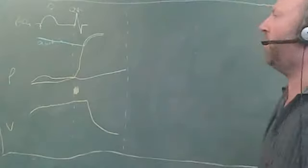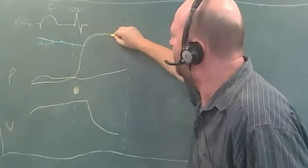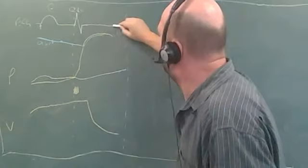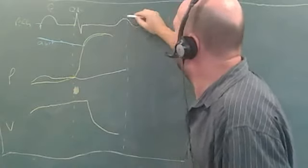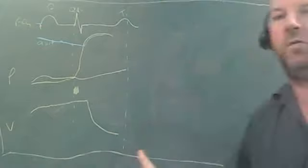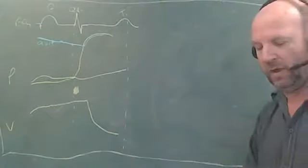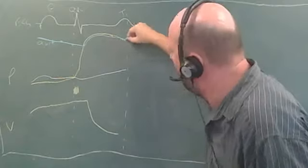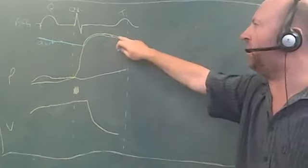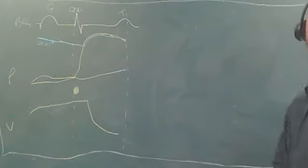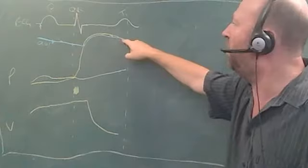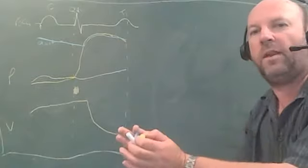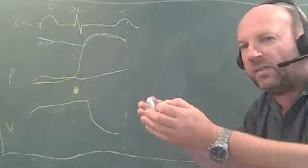As the ventricle continues contracting, its pressure remains greater than aortic pressure. Eventually the ventricle begins to relax, indicated by the T-wave of the ECG, which is due to ventricular repolarization. As the ventricle relaxes, pressure drops and eventually becomes less than pressure in the aorta. The aortic pressure actually becomes greater than that of the ventricle slightly before the valve shuts — the kinetic energy of blood going through the aortic valve during ejection causes a slight delay in valve closure.